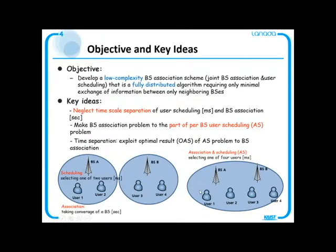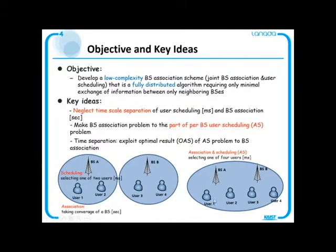This figure shows the difference between the AS problem and the traditional user scheduling and user association problem. In the traditional problem, at each time slot, base station A selects a user among user 1 and user 2 who is in the coverage of base station A, as given by base station association. In the AS problem, base station A selects a user among all users at each time slot, regardless of coverage.